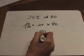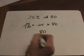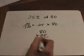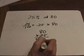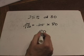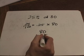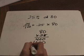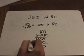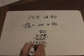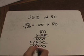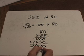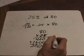We solve it by doing 80 times 0.25. Zero times five is zero, eight times five is forty. Now we need a placeholder and multiply by the next digit: zero times two is zero, eight times two is sixteen. Adding those up: we carry and get 2000, but we have two numbers past the decimal point in the problem, so we need two past the decimal in the answer.